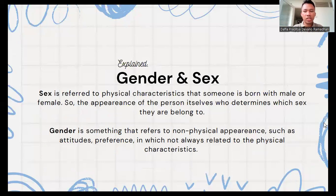So what is gender and sex? Sex refers to physical characteristics that someone is born with, male or female. The appearance of the person will determine which sex they belong to. And gender refers to non-physical appearance, such as attitudes, preferences, which are not always related to physical characteristics.